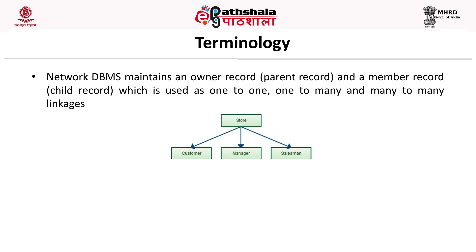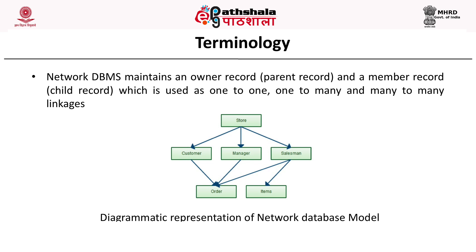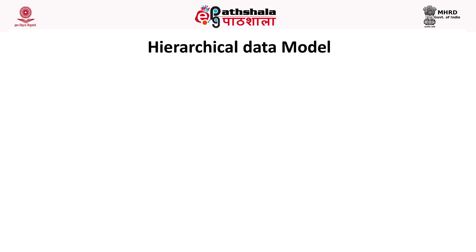A diagrammatic representation of the network database model shows that a store can have a one-to-many relationship with customer, manager as well as the salesman. Also, the customer, manager and salesman will have a many-to-one relationship with maybe the order or with the items.